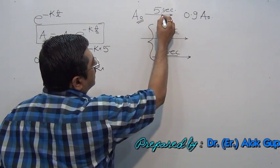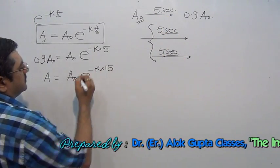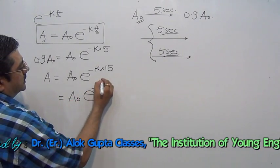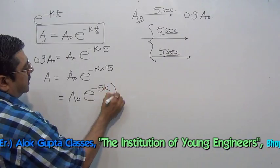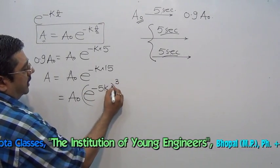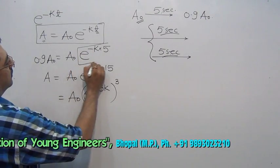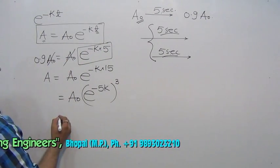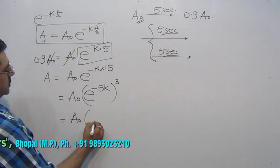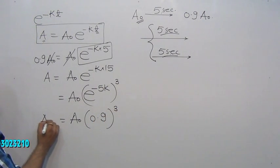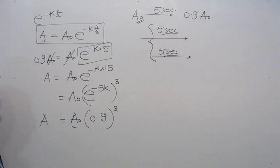Second time we have to find this, but the time is now for further 10 seconds. From initial it is 15 seconds. I can write from here: it is -5k whole cube, so 5·3 = 15. Put the value from here. A₀ cancels, it is A₀ · 0.9³.